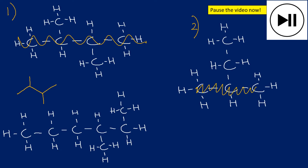For the second example: there are three carbons in a row — one, two, three — and then two more carbons coming off the middle carbon, so that's an ethyl group as a side chain. For the third example, there are six carbons in total — one, two, three, four, five, six — with a methyl group on the second-to-last carbon. Double-checking: one, two, three, four, five, six. That's the answer to the third one.